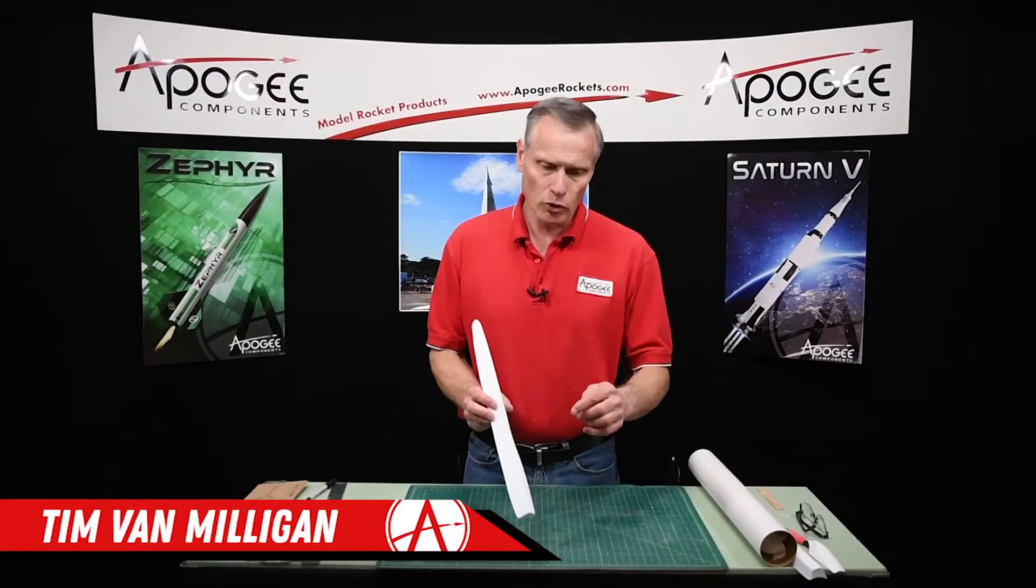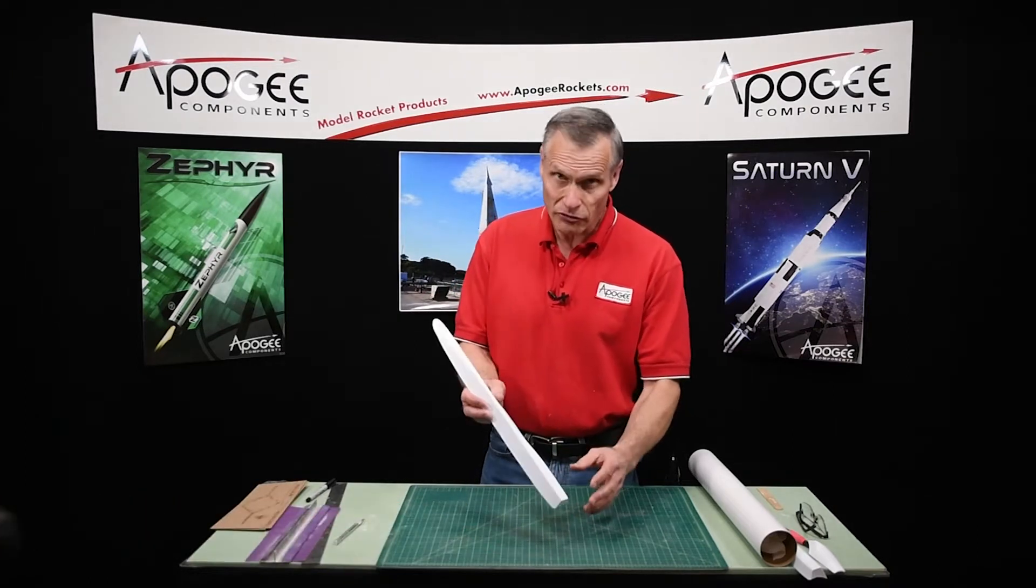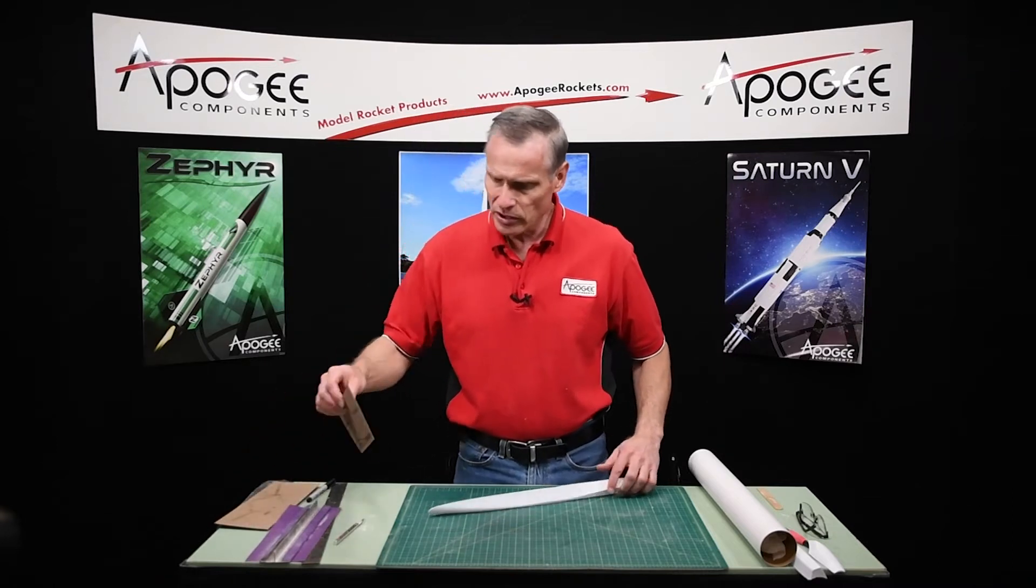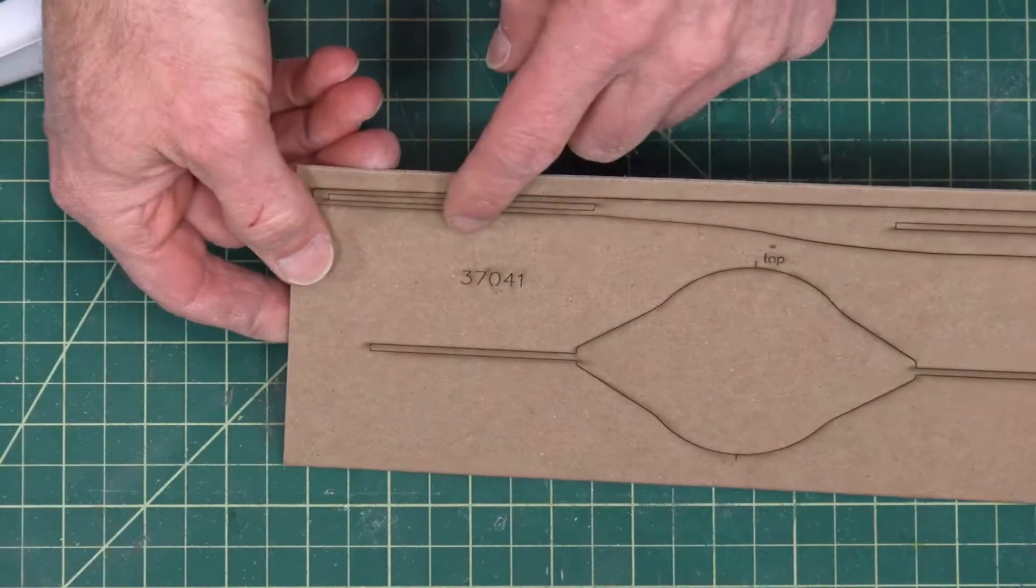In this step, we're going to cut slots for the fins and the tails onto the fairings. Now for that, we're going to use a template. And this template is in this sheet right here, 37041.